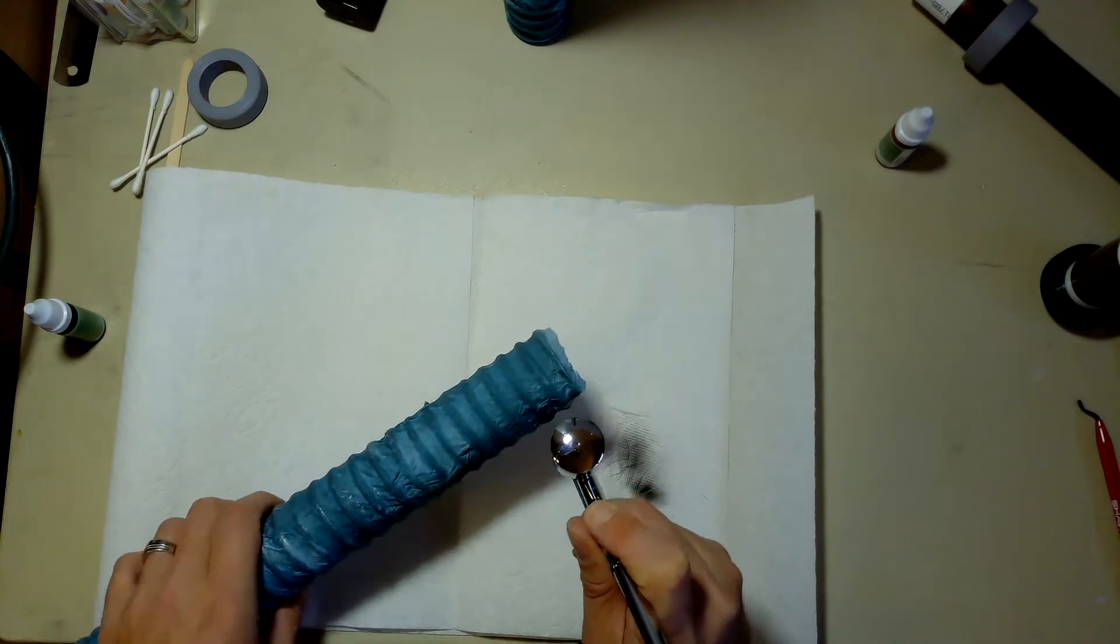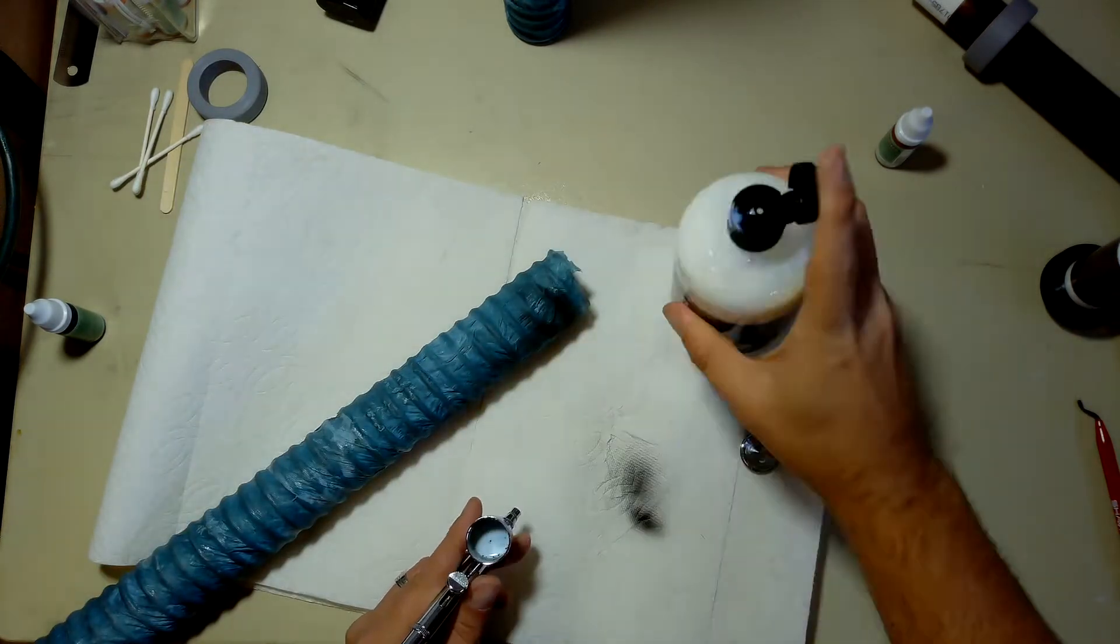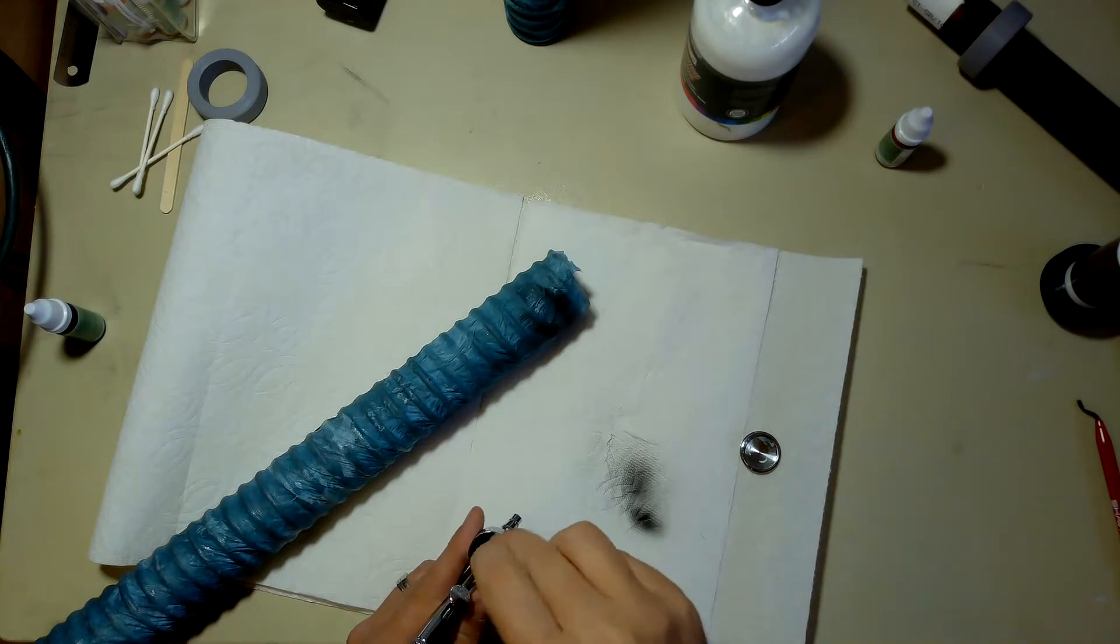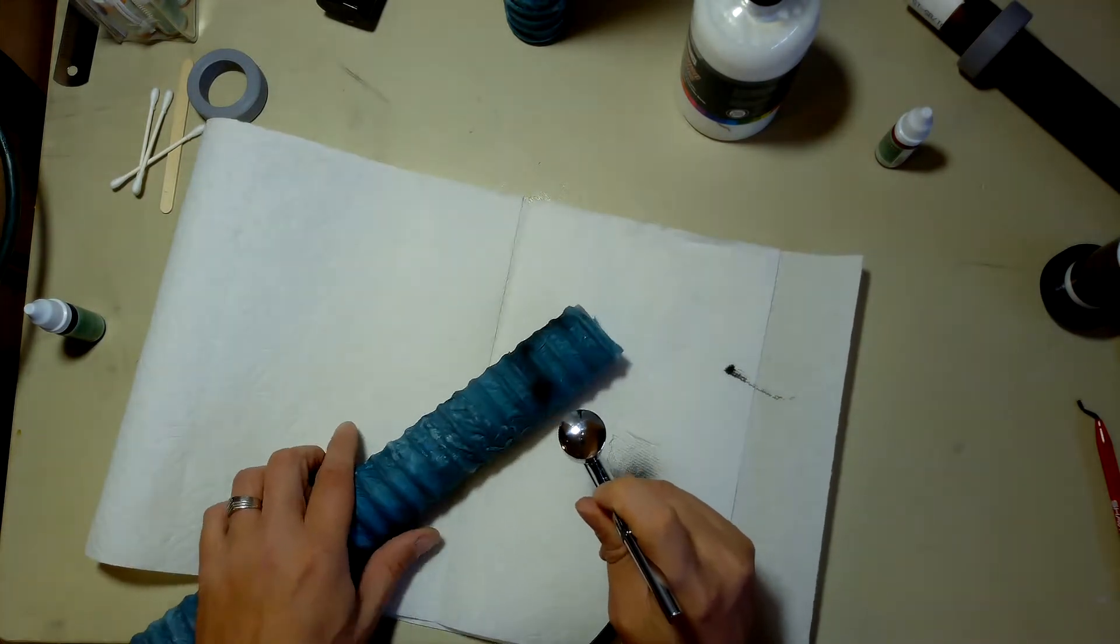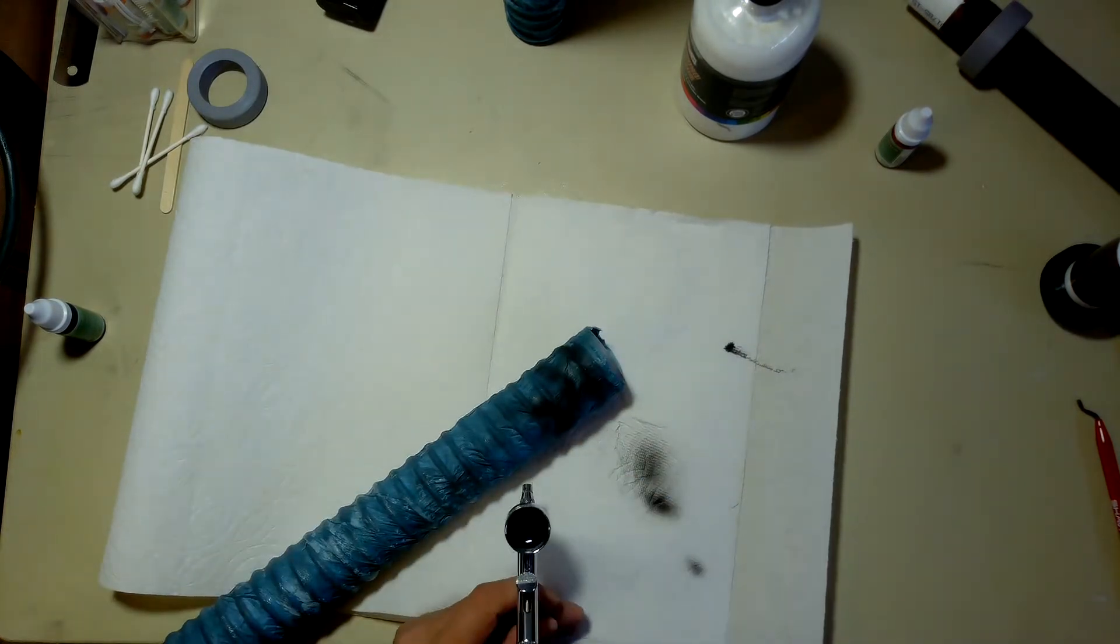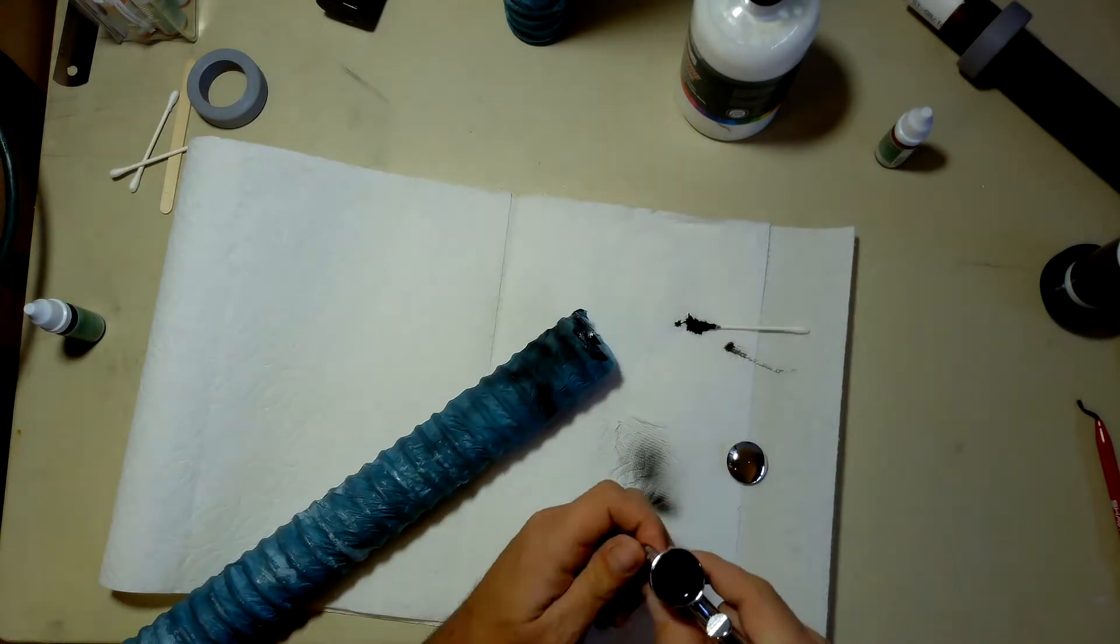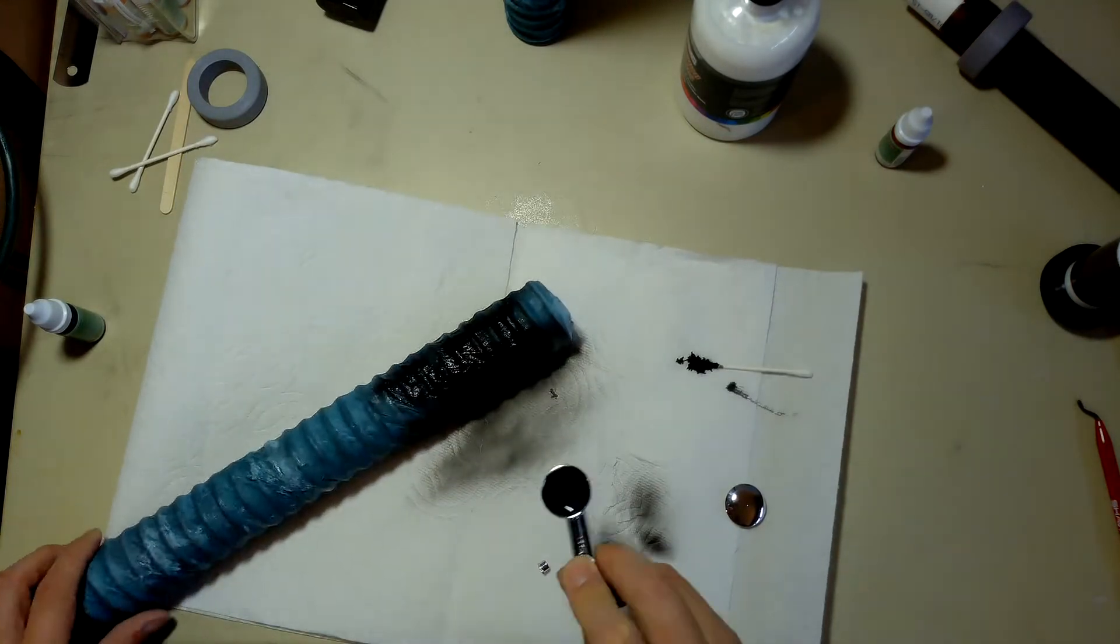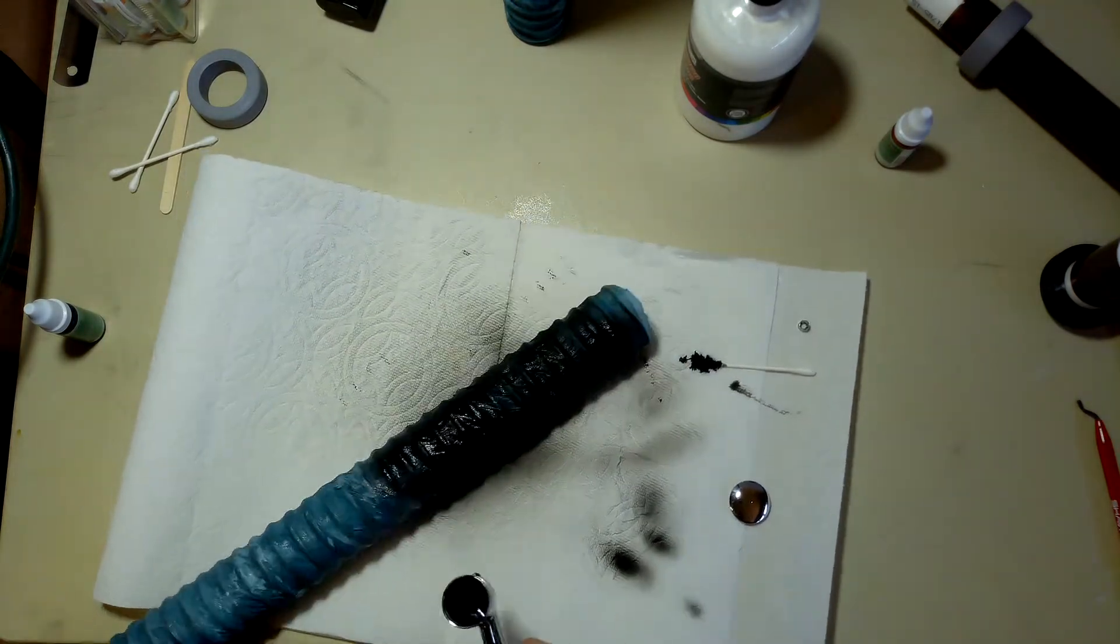Next I went back to the handles and started painting. Using an airbrush is new for me, so you'll see a lot of mistakes. I'm wearing a mask while doing this and I also have a fan blowing out of the garage while I'm working. This is just Mars black paint, which I used as an undercoat.